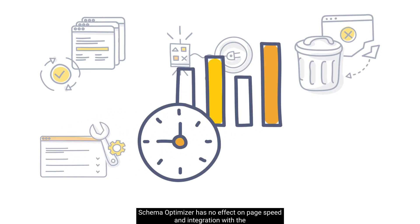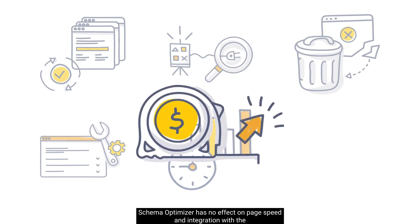Schema Optimizer has no effect on page speed, and integration with the SEO Clarity platform means you get automatic reporting on the schema's impact on CTR and traffic.